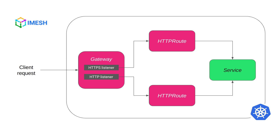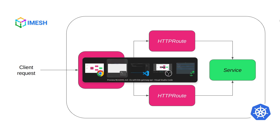For simplicity, both routes will end up in the same service — the echo service that we'll be deploying. We'll also be using cert-manager to manage the certificate and handle auto-renewal. Let's jump into the code.